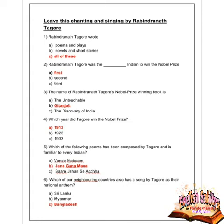We now move to the MCQs of the poem Leave This Chanting and Singing by Rabindranath Tagore. First question: Rabindranath Tagore wrote what? Options are poems and plays, novels and short stories, and all of the above. Option C is correct — all of the above. Next question: Rabindranath Tagore was the first what Indian to win the Nobel Prize? Option A is correct — he was the first Indian to win the Nobel Prize.